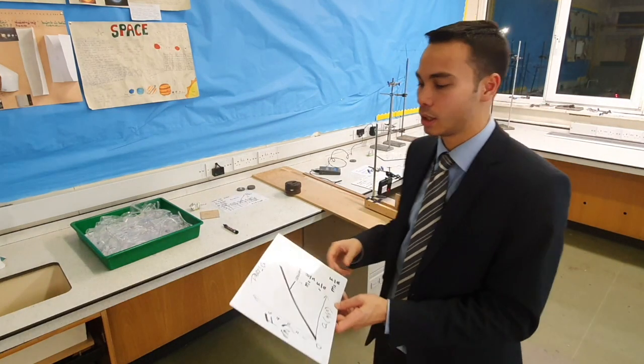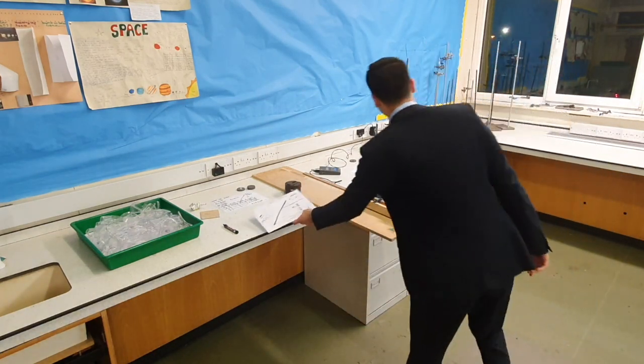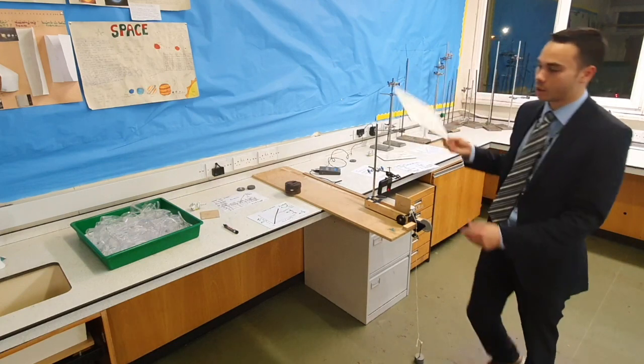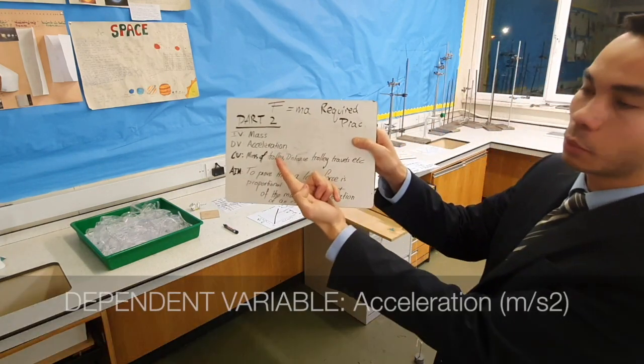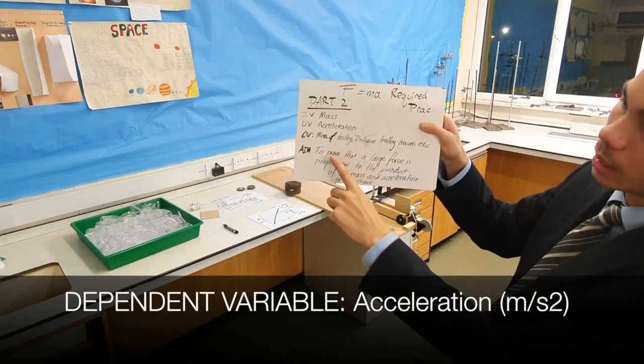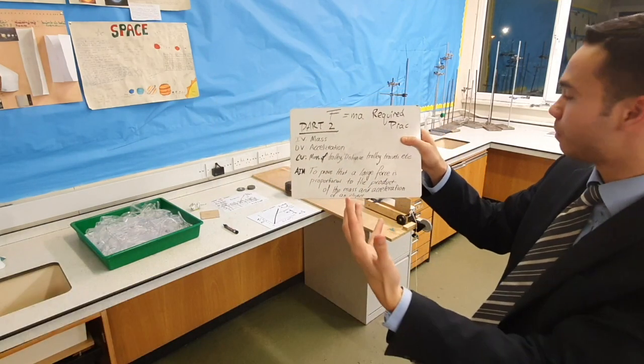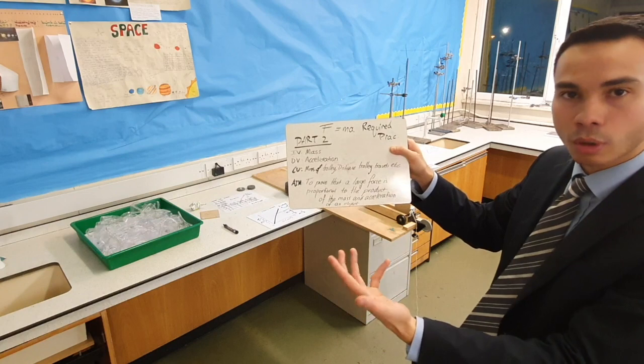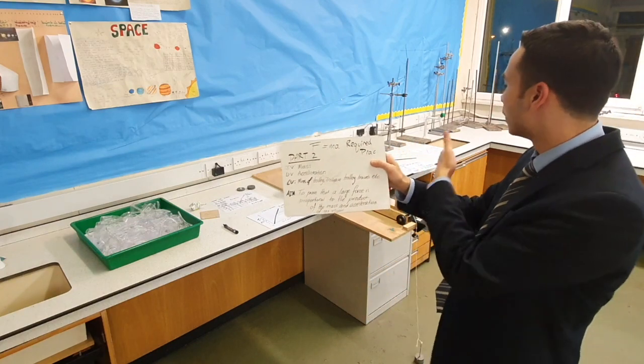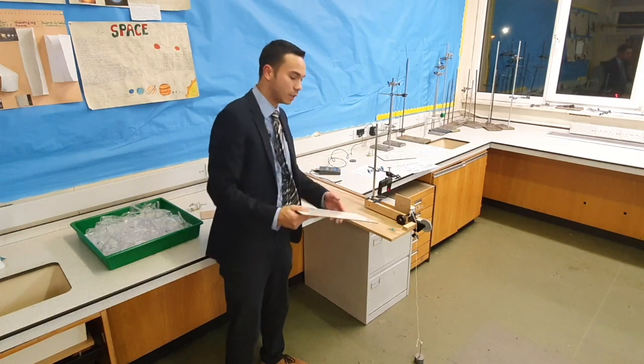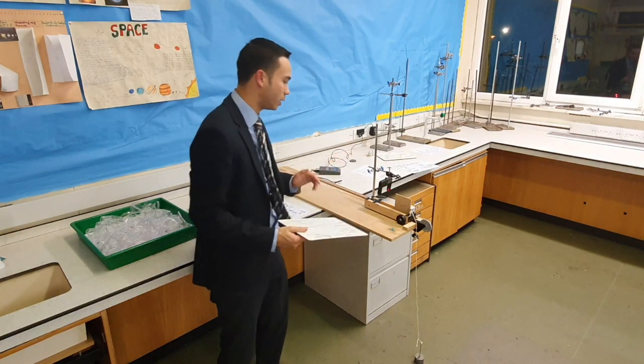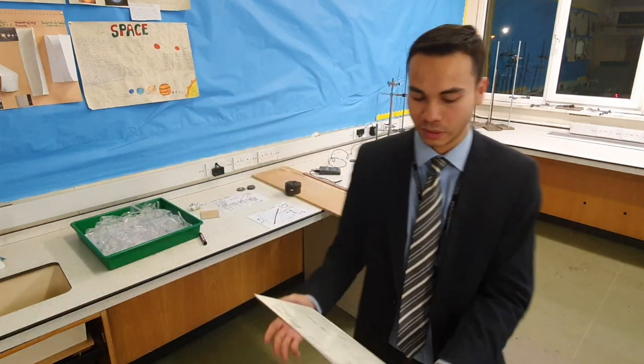In the second part of this experiment, our independent variable is going to be the mass. Our dependent variable is going to be the acceleration. Control variables are going to be the same thing: the mass of the trolley, the same type of trolley, the distance that the trolley passes through, which is 50 centimeters. Our light gate and all our measuring devices are still going to be the same. We're now going to show you how to use the data logger, which is connected to our light gate.